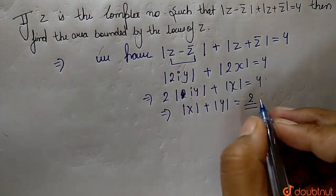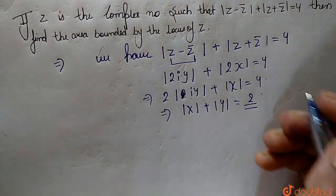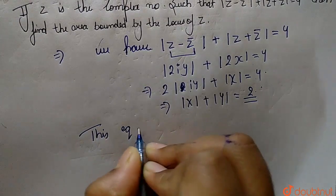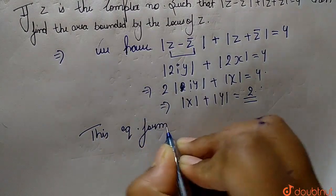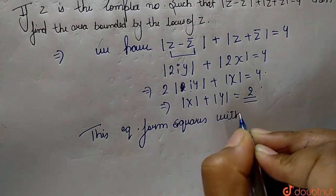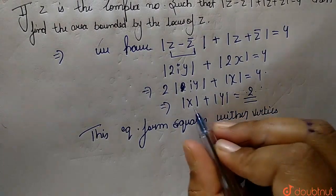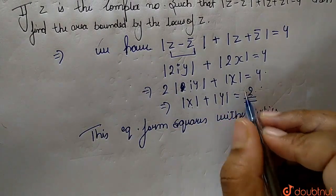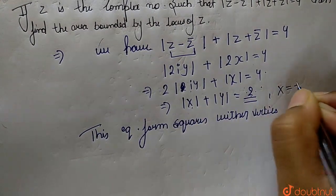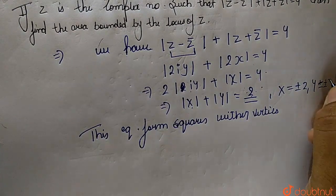The area bounded by the locus of z with the origin point gives us 2 only. This equation forms a square, with vertices. When we remove the mod sign we have plus or minus, so for the value of x we have plus or minus 2, and for y we have plus or minus 2.